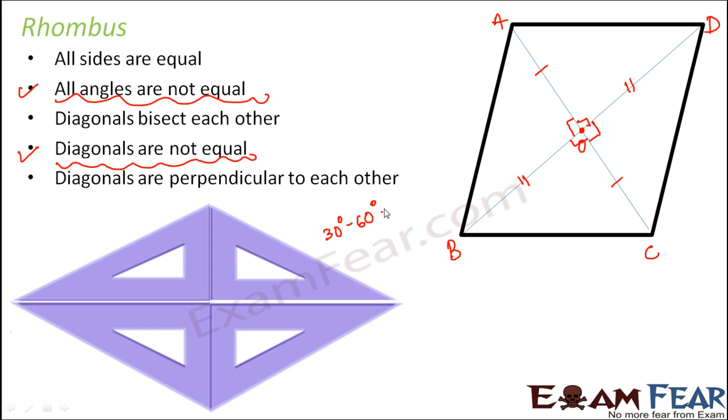We have taken 30, 60, 90 set squares. Now we have arranged 4 set squares in this fashion such that this side of all the set squares are equal in length. So therefore all sides are equal but at the same time these angles are different. All sides are equal but all angles are not equal.